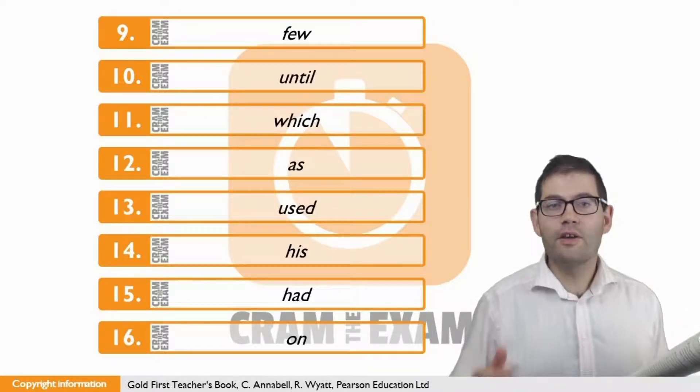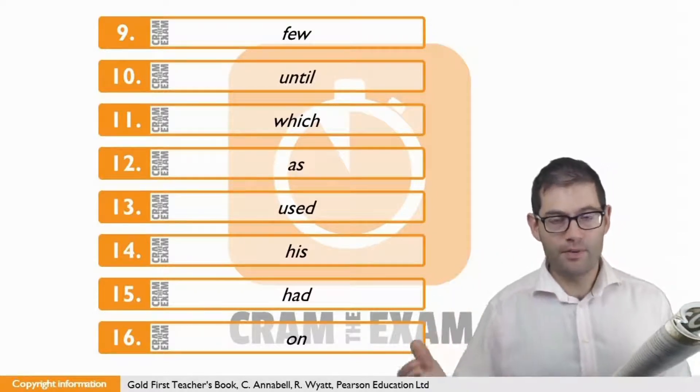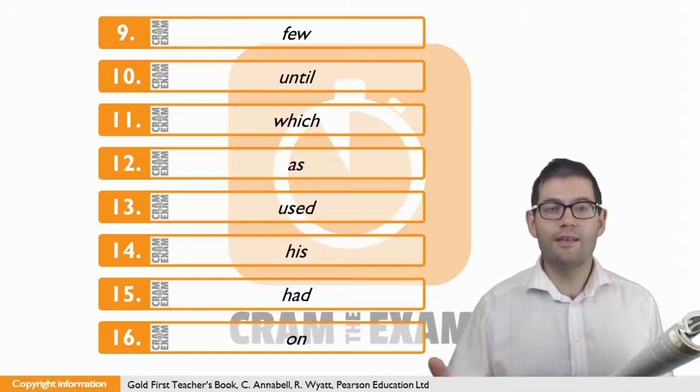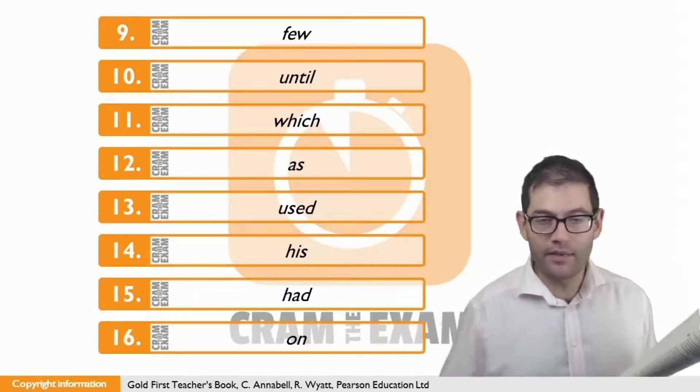For question twelve, this is a simple verb preposition collocation. We need the preposition as. You define something as something.